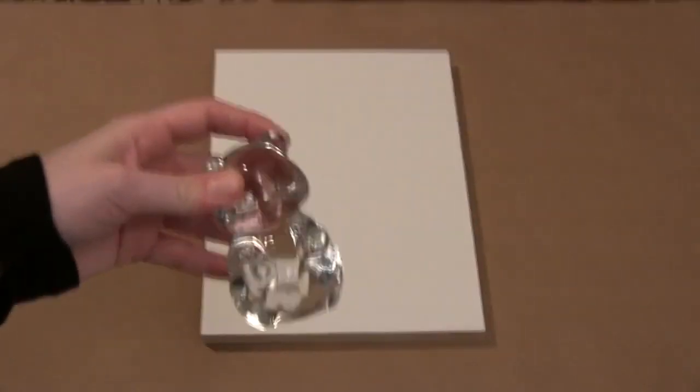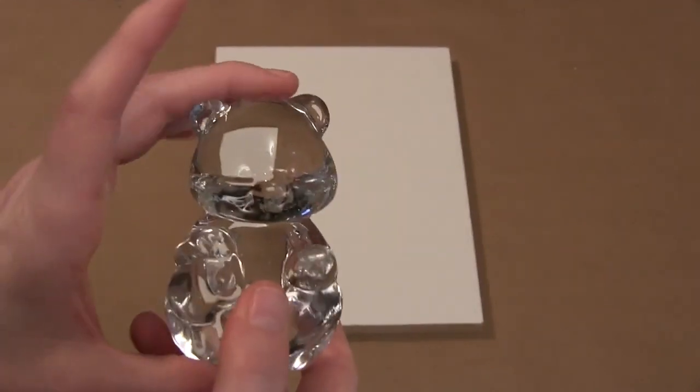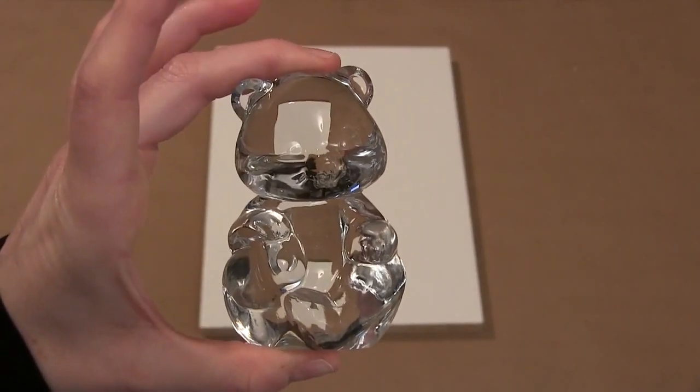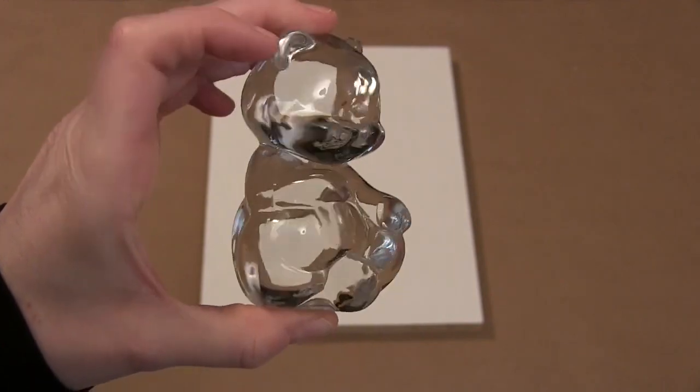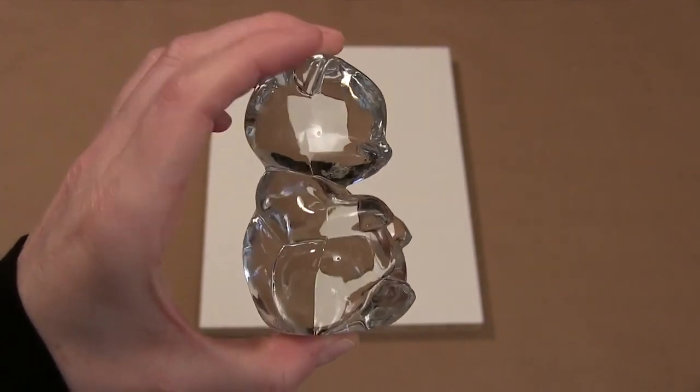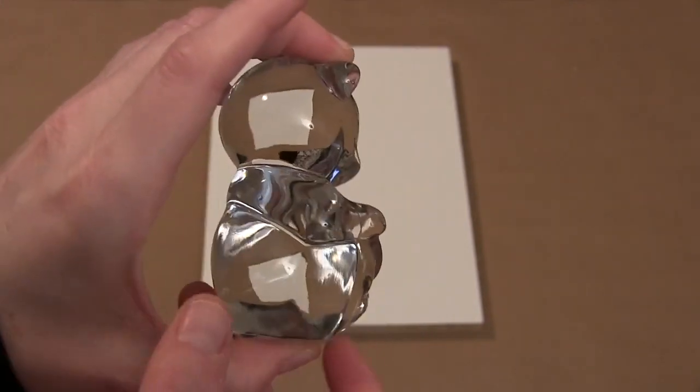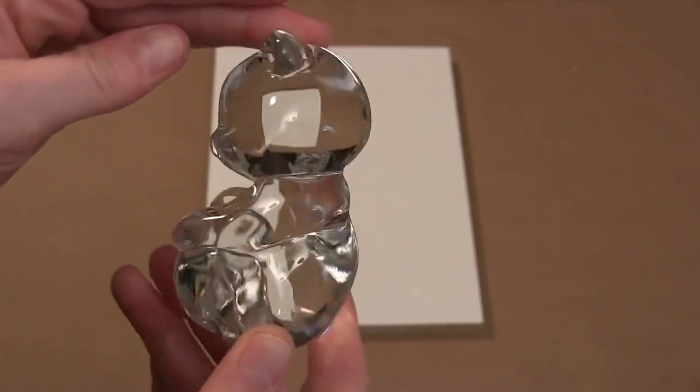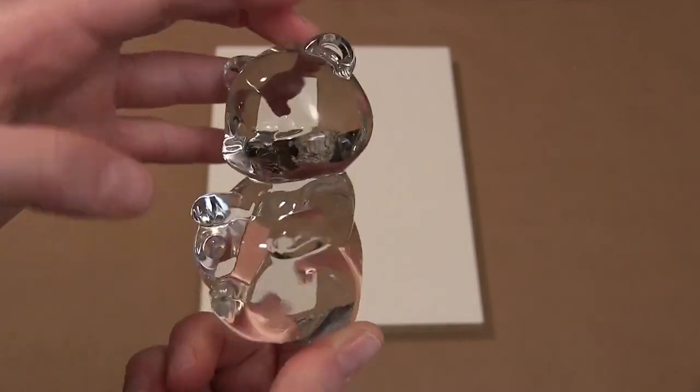So today my model is this cute little glass bear that I found at a local antique shop. I thought it would be a great model to replicate because it's small in size and it's not too complicated. Although it does have some undercuts, so it will require a two-part mold.